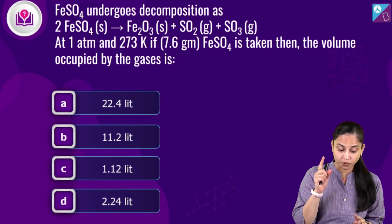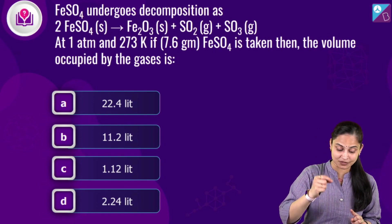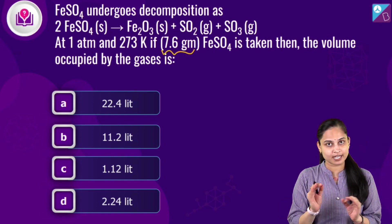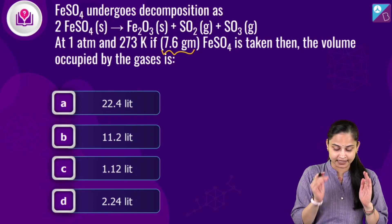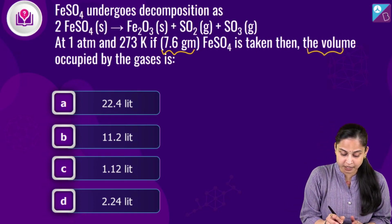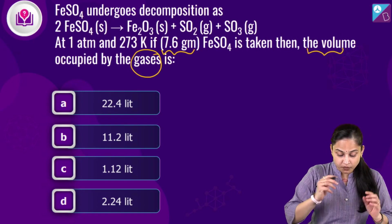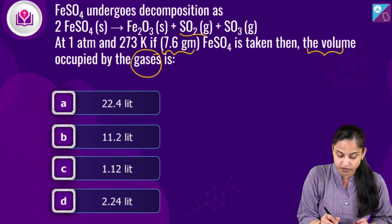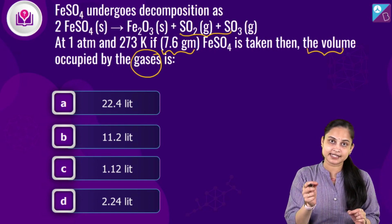Now at 1 atm and 273 Kelvin, if 7.6 gram FeSO₄ is taken, then we want to calculate the volume occupied by the gases. So we want to calculate the volume that is occupied by these two gases, sulphur dioxide and sulphur trioxide.